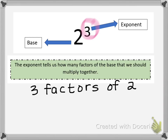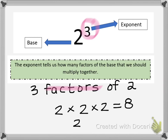Factors are numbers that you multiply together to create a larger number. So if I have 3 factors of 2, that means I have 2 times 2 times 2, which equals 8. So 2 to the third power is equal to 8.